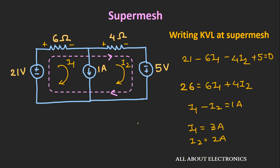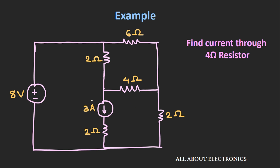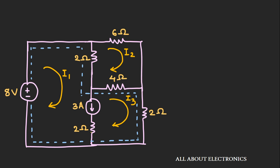Let's see one more example using the super mesh technique. We have an electrical circuit with three meshes, and we are asked to find the current through the 4Ω resistor using mesh analysis. Let i1, i2, and i3 be the currents through the three meshes. There is a current source connected between mesh number 1 and mesh number 3, so we can consider these two as a super mesh. We therefore need to write only two KVL equations for the circuit.